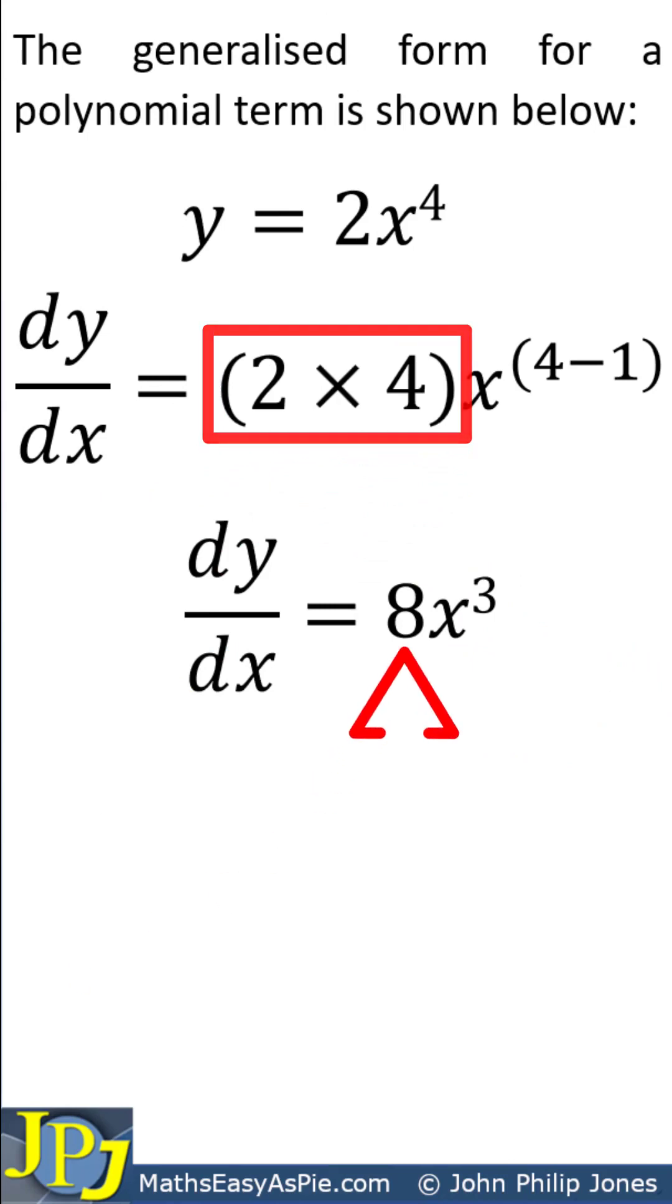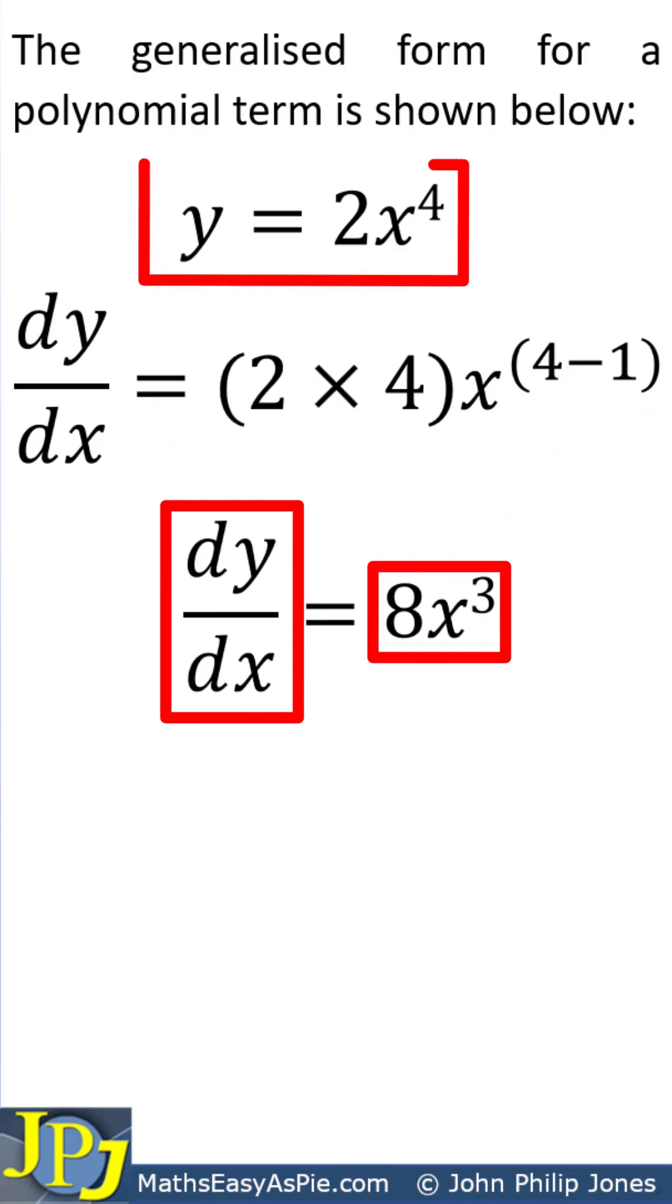Now this 2 times 4 gives 8, and this 4 minus 1 gives 3. So this is the derivative of this.